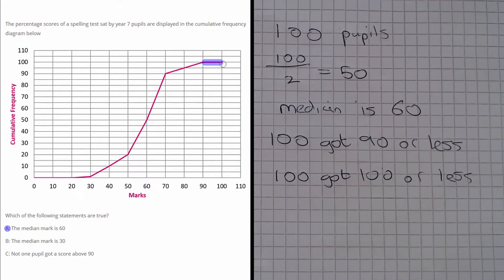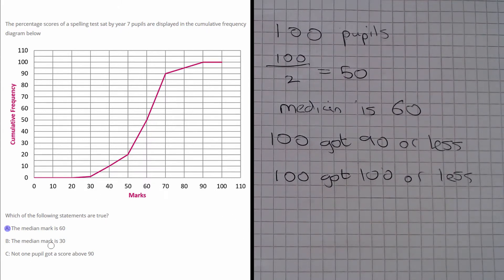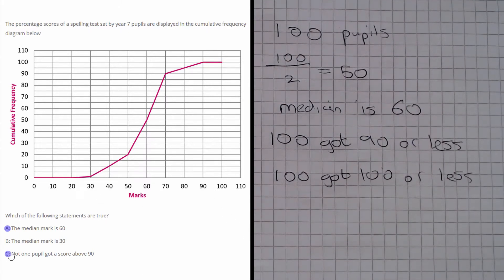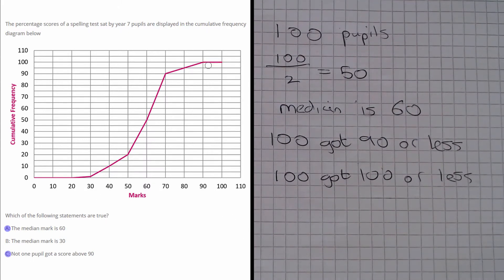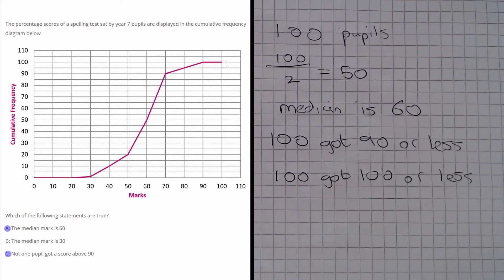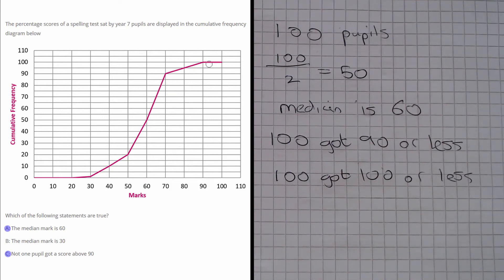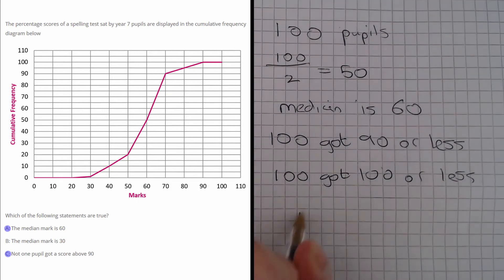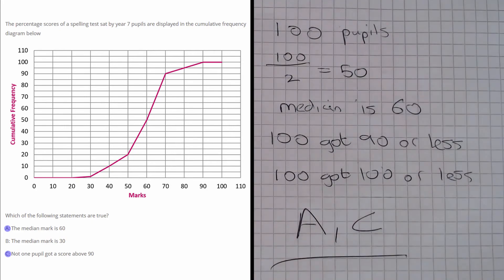So the answer to this part is true. Now the easy way to spot this is just by noticing that the graph is flat here, and that means there is no growth. So there is no one who got above 90. So the answer to this question is A and C.